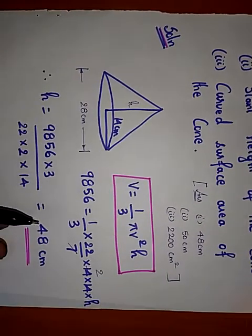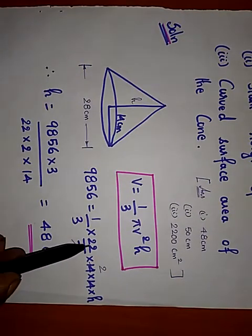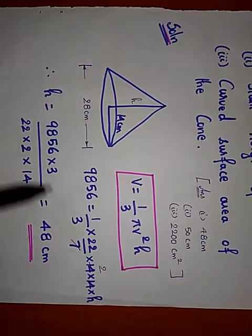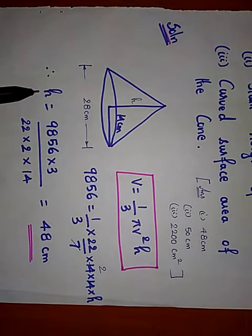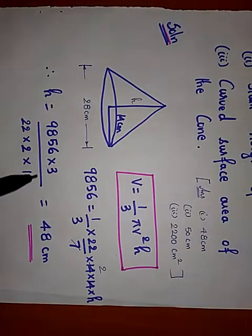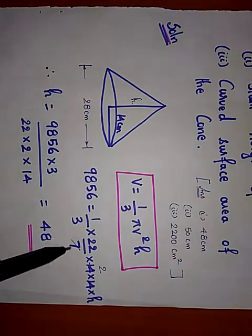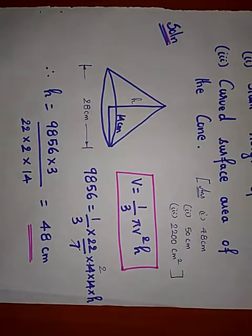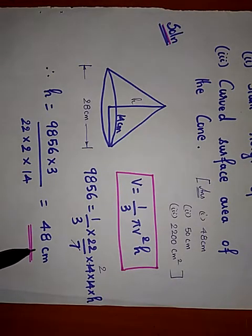h = (9856 × 3) / (22 × 2 × 14). If you simplify, you will get h = 48 centimeter. This is the first part of the answer.